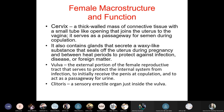The urethra joins the urinary bladder to the vagina prior to the opening at the vulva. The cervix is a thick-walled mass of connective tissue with a small tube-like opening joining the uterus to the vagina. It serves as the passageway for semen during copulation and contains glands that secrete a wax-like substance that seals the uterus during pregnancy and between heat periods to protect against infection and foreign matter. The vulva is the external portion of the female reproductive tract that protects the internal system from infection, receives the penis during copulation, and serves as a passageway for urine.